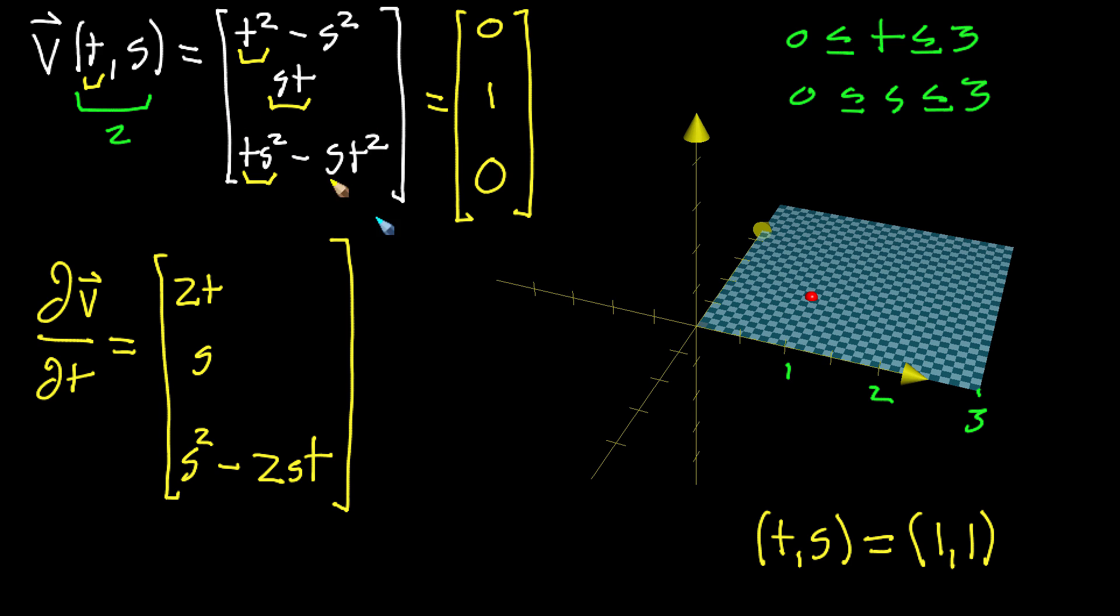Which means the output corresponding with this input should be the vector 0, 1, 0, a vector that's of unit length pointing in the y direction. So if we look here, this is the x-axis, this here is the y-axis. So you would think it should be a vector that looks kind of like this, unit vector in the y direction. And the point of the surface is what corresponds to the tip of that vector.